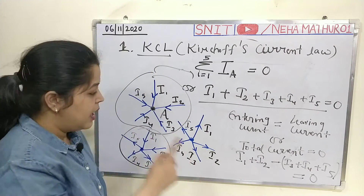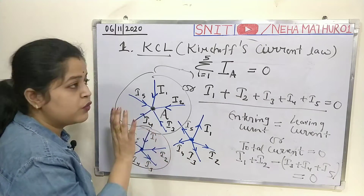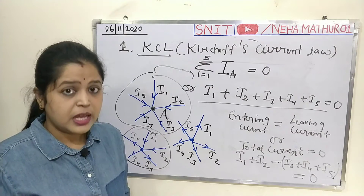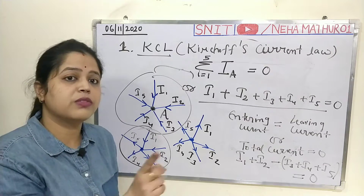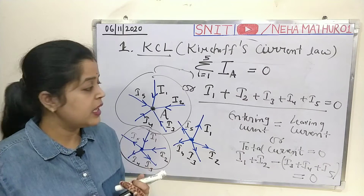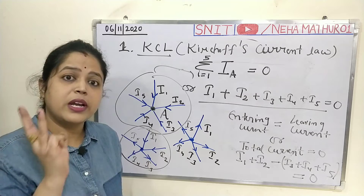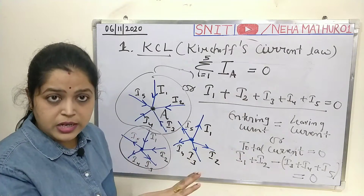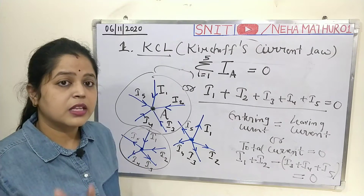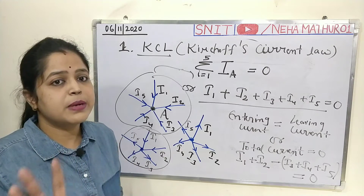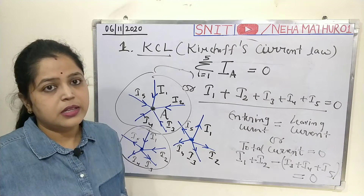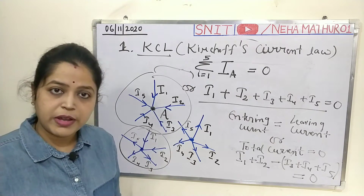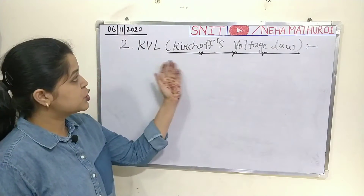Here we considered only one node, but when solving questions with any given circuit, you may have one or more nodes. In that situation, you write equations for each node. If you find three nodes, you write three node equations; if you find four nodes, you write four equations. The concept is the same for each node — the total algebraic sum at each node equals zero, regardless of how many nodes the circuit has.